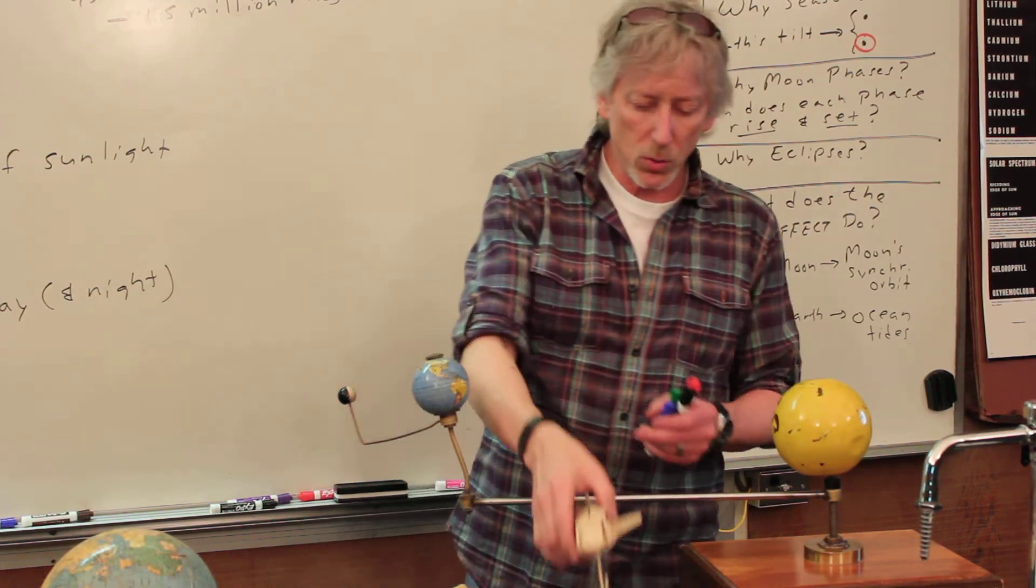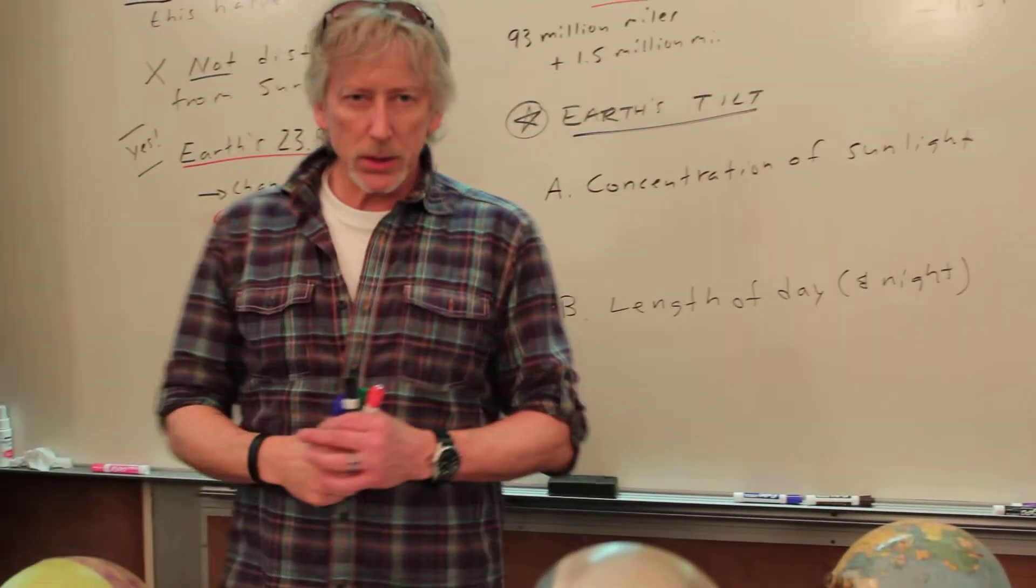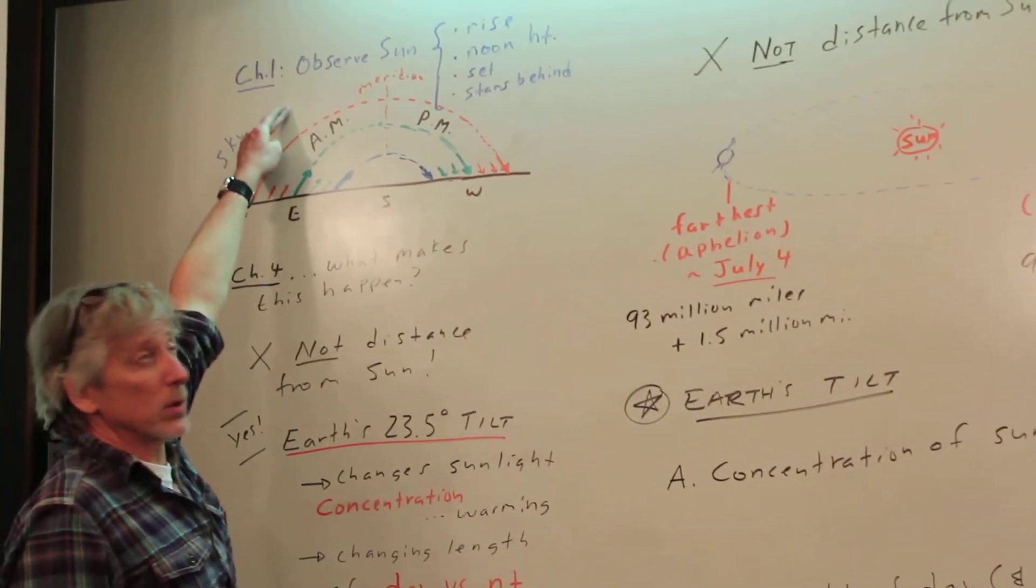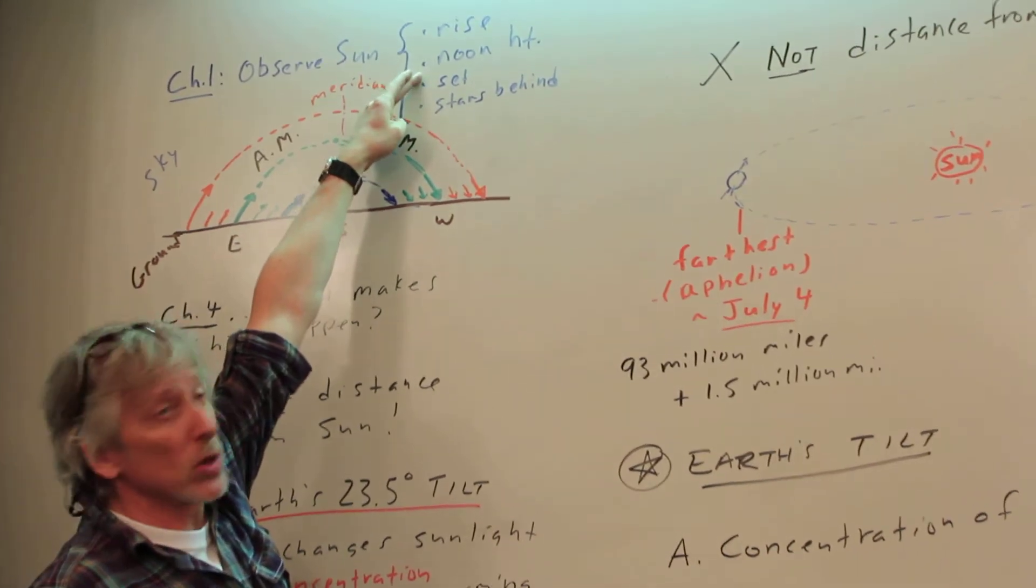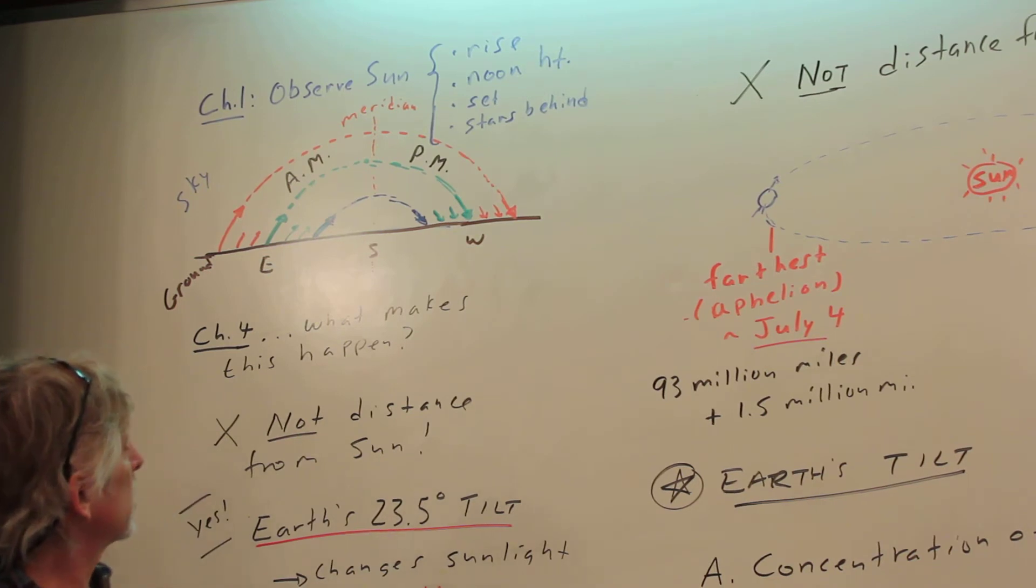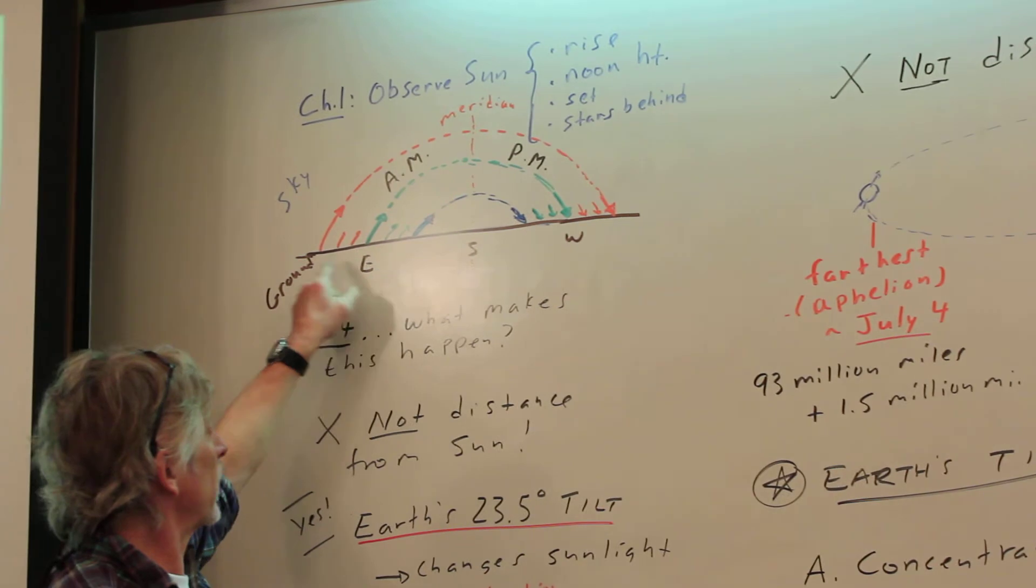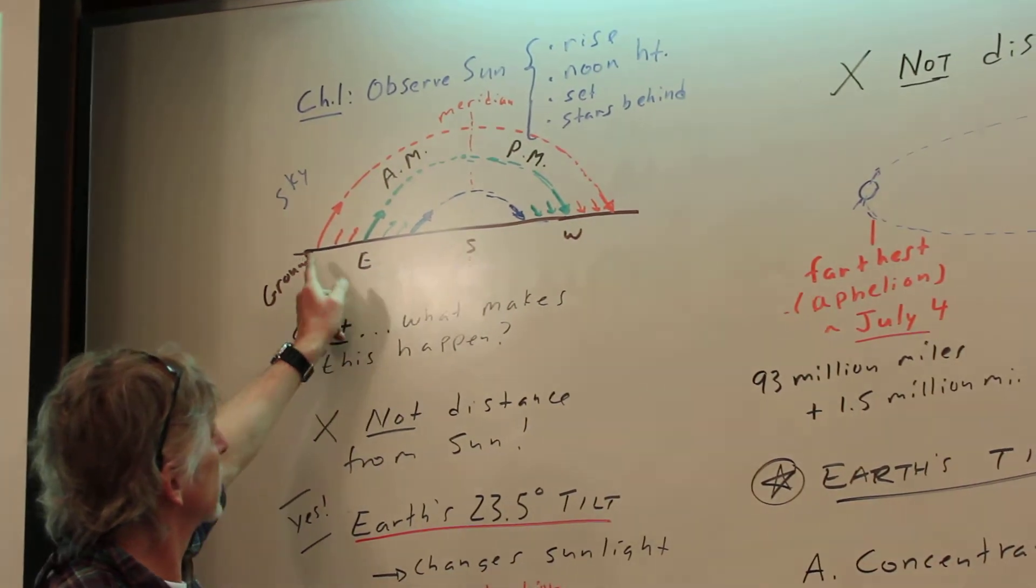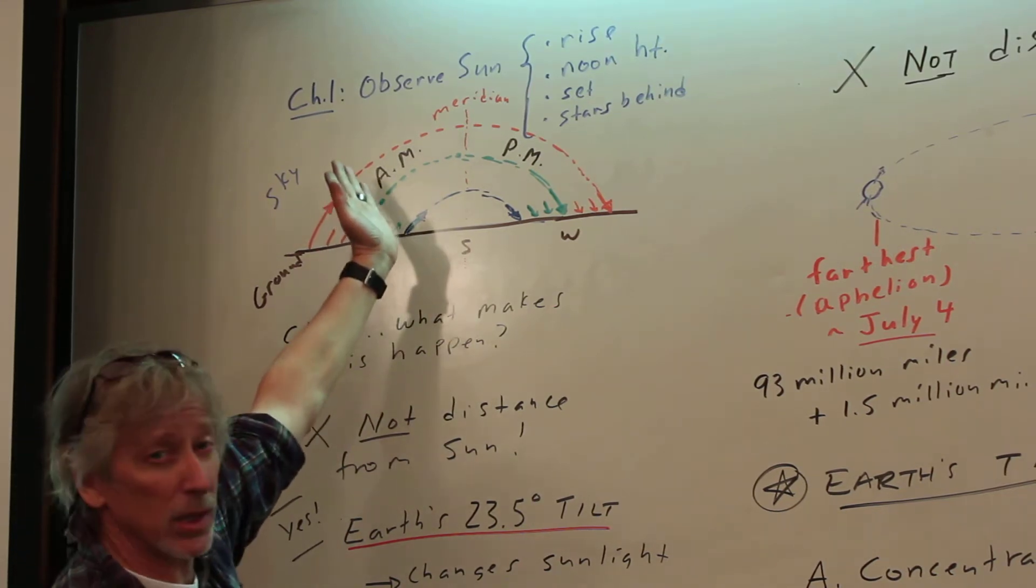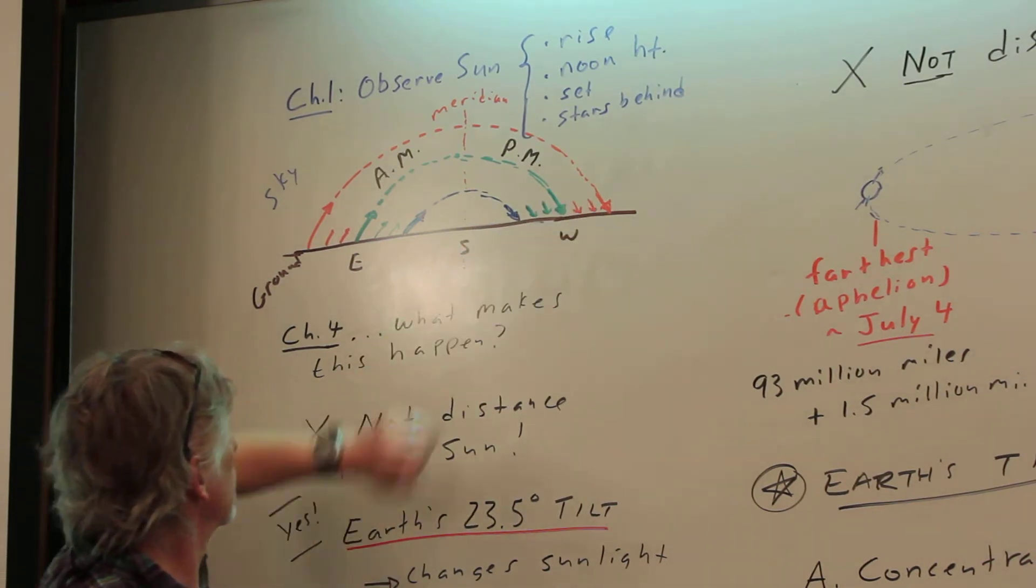So we're trying to connect that now. Let's go here and think about the seasons. So in chapter one, we observed Sun. We observe where does it rise, how high does it go around noon, where does it set, what are the stars behind Sun? We drew this picture, and that's just what people could know as ancients, but they could know where it would rise, how high it went on the meridian, where it sits before the meridian, on this meridian, on this meridian, or past or post the meridian.